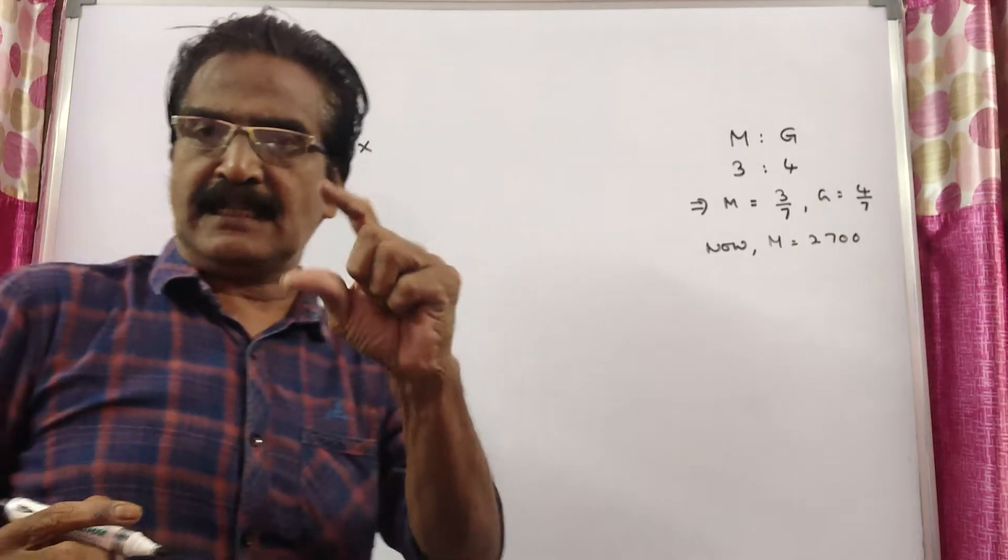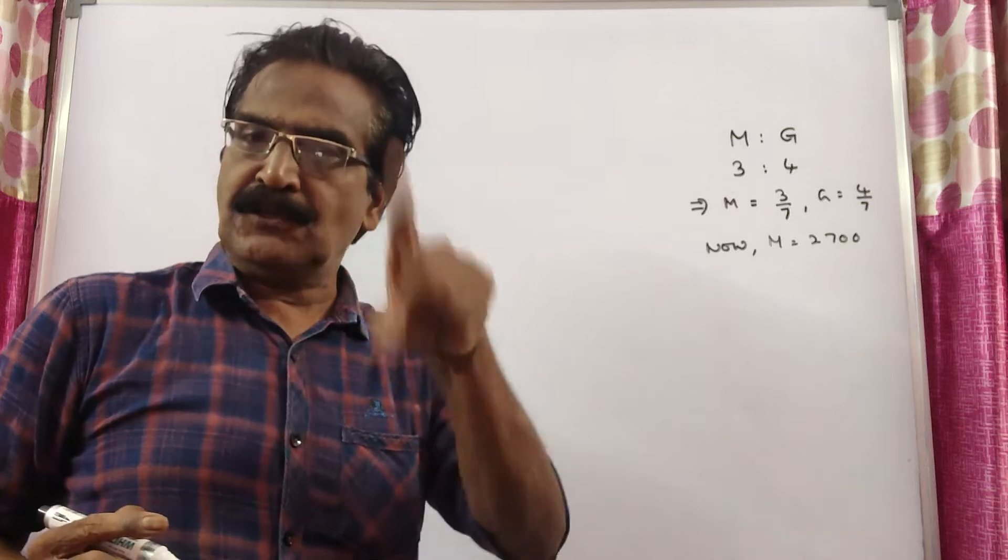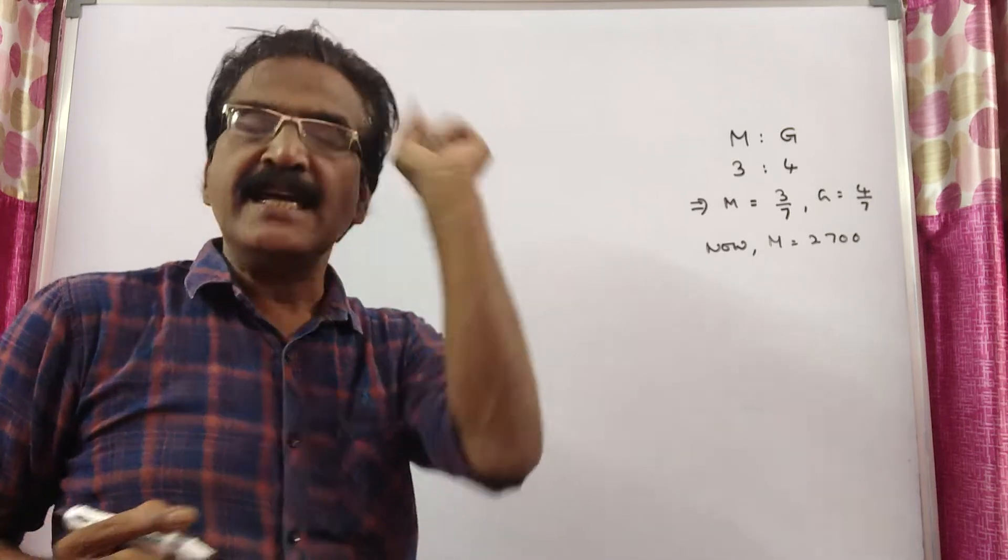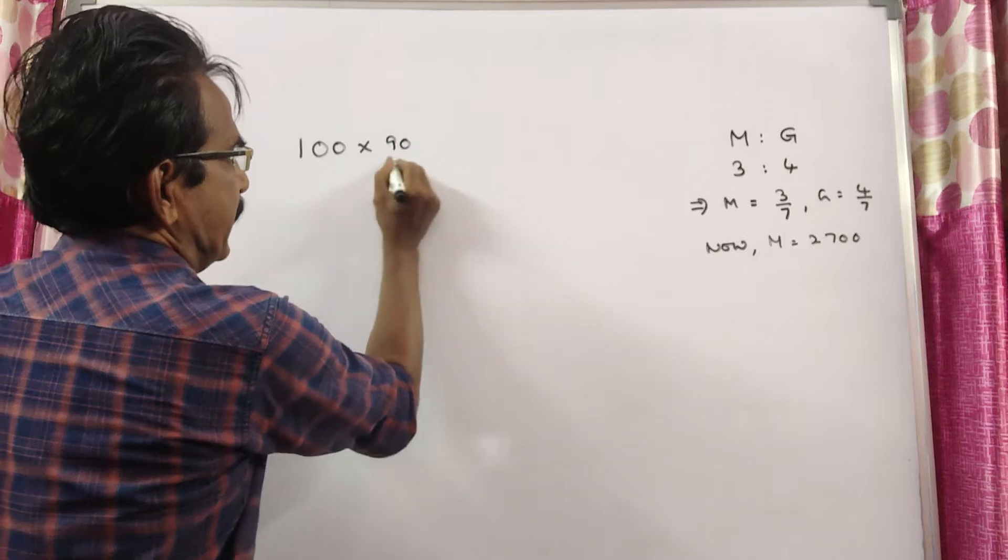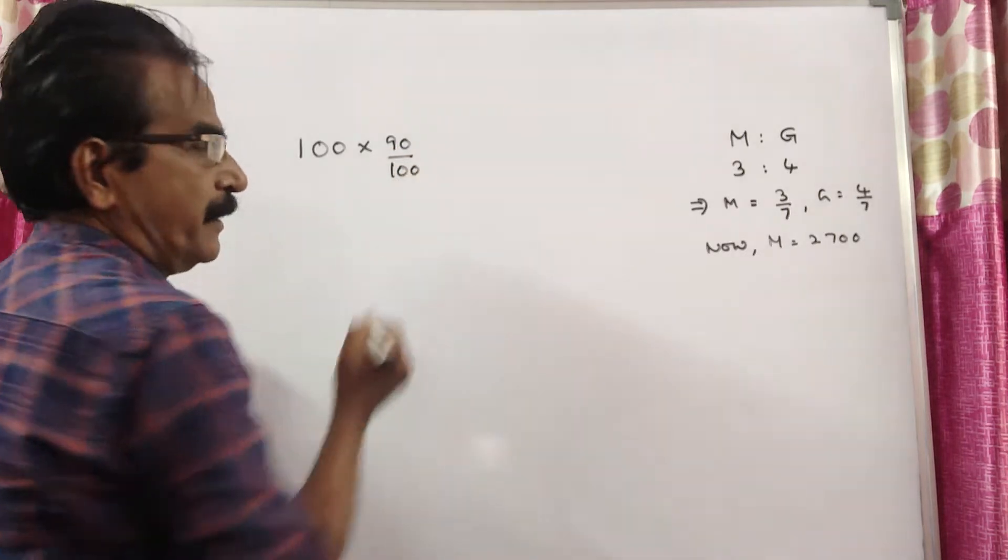He deposits 10% of his salary in PF. So what is the remaining salary? 90%. This is the remaining salary after PF.